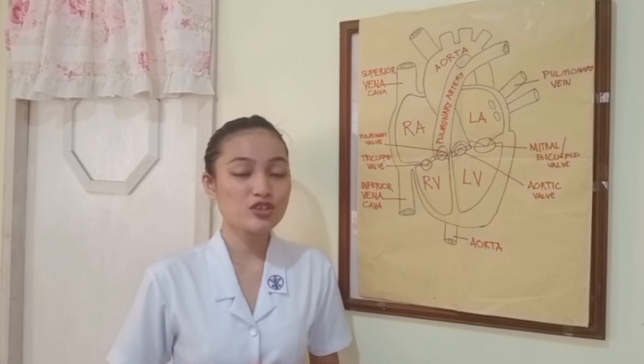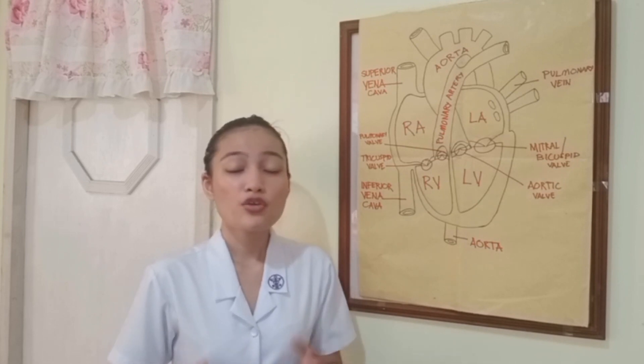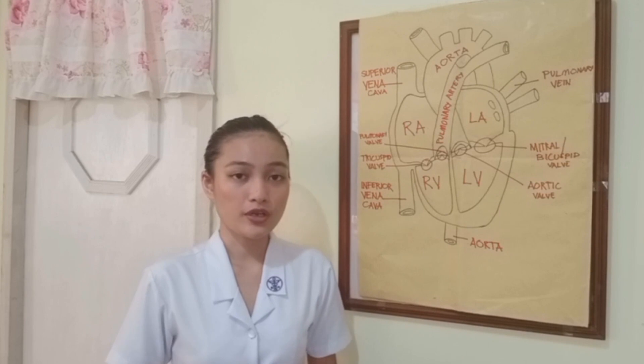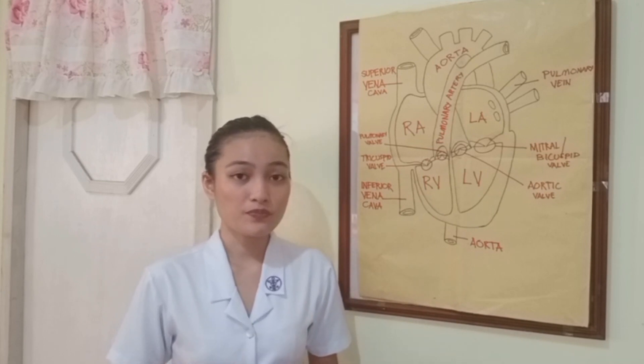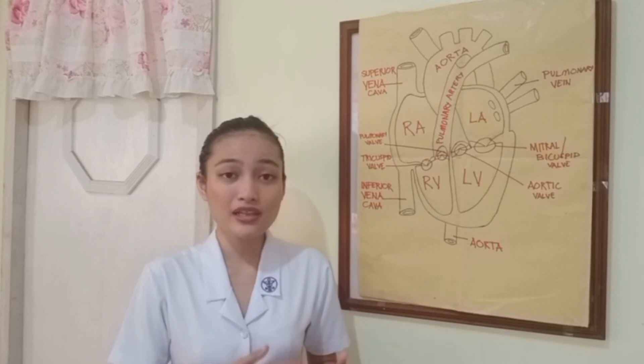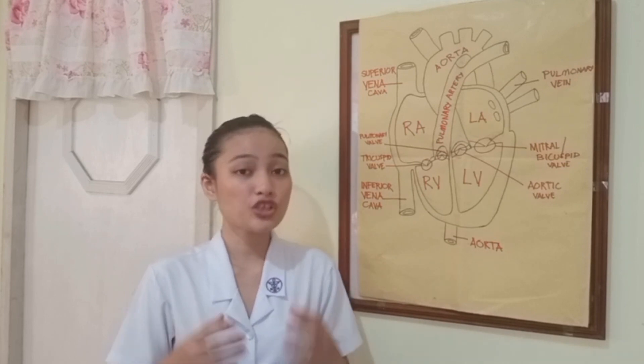The heart is a primary organ of the circulatory system and is responsible for pumping blood throughout our body. It also coordinates with other body systems to control the heart rate and our blood pressure. The heart is somewhat situated to the left and behind the sternum and is shielded by the ribcage.